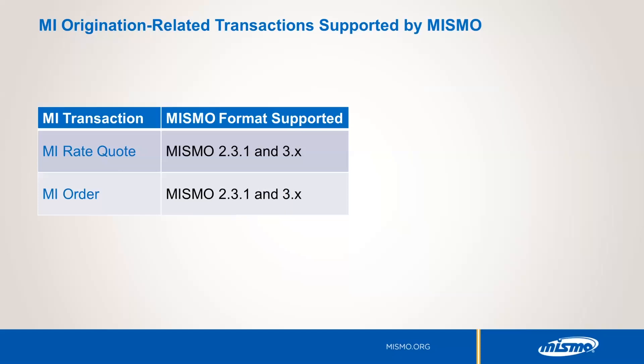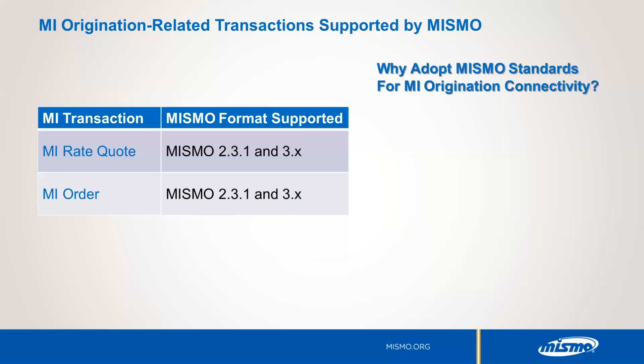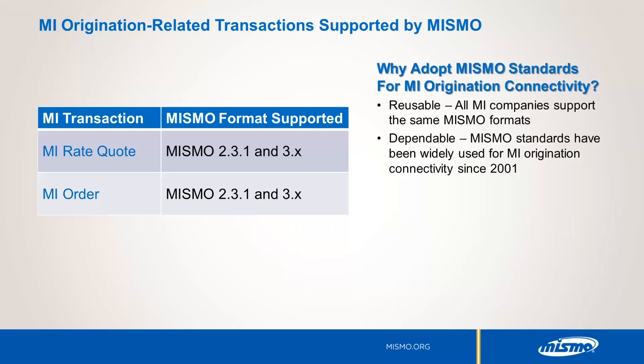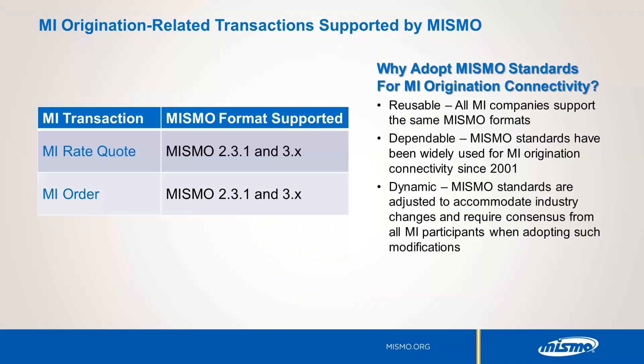Please note that as MISMO versions evolve, so will MI partners' support. There are several benefits for adopting MISMO standards for MI origination connectivity. First, MISMO is supported by all MI companies, so your integration code is reusable. MISMO is also dependable and has been widely used for MI origination since the early 2000s. MISMO standards are dynamic and have been adjusted to accommodate all required industry changes as our industry evolves.